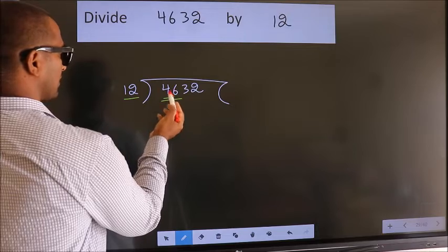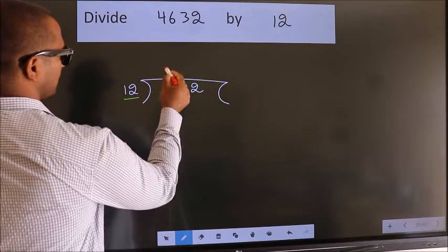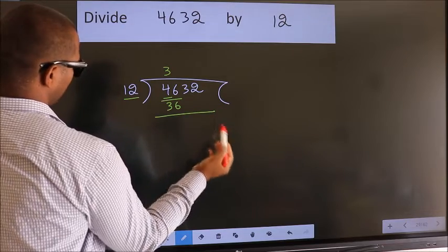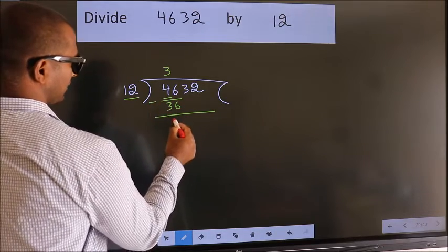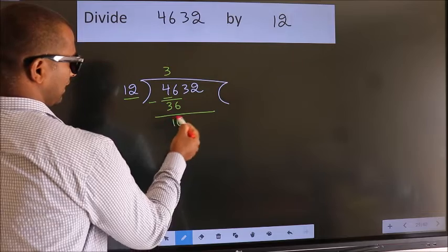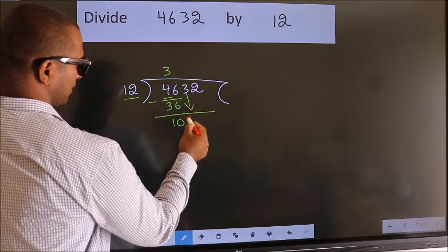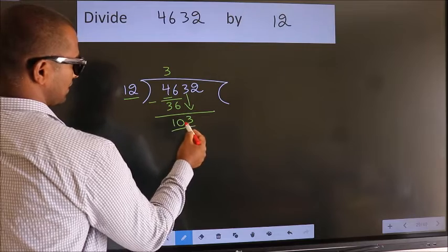A number close to 46 in the 12 table is 12 threes, 36. Now we should subtract. We get 10. After this, bring down the beside number. So, 3 down. So, 103.